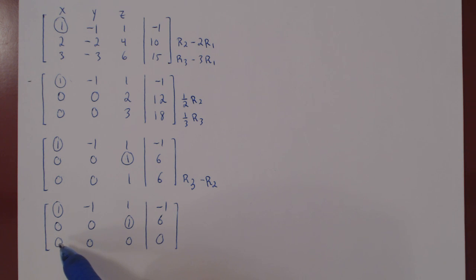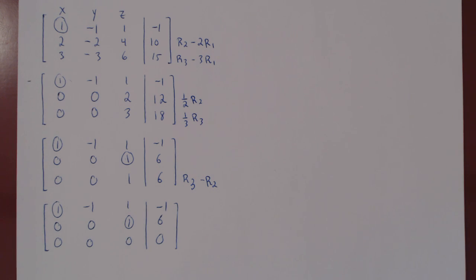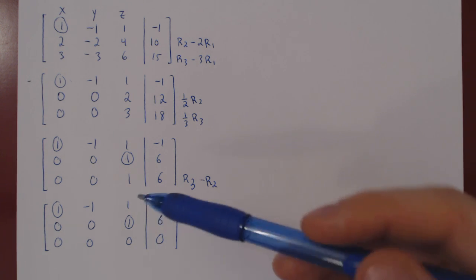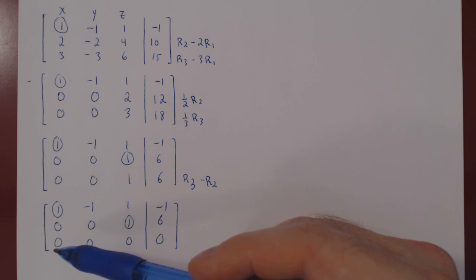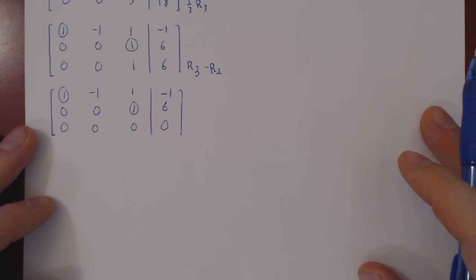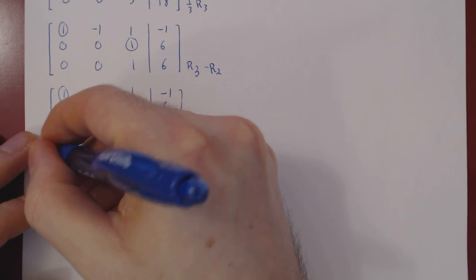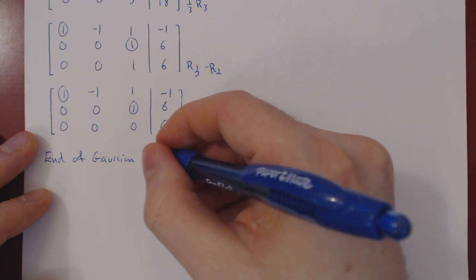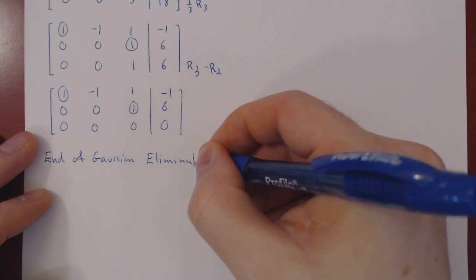Applying row three minus row two, the entire third row becomes a row of zeros. This is no problem — it simply says zero times x plus zero times y plus zero times z equals zero, which is always true for any choice of x, y, and z. It is a vacuous row; zero equals zero. This completes Gaussian elimination: we found leading ones and killed all entries below them.